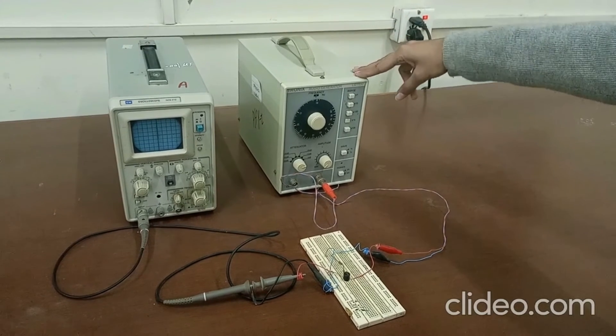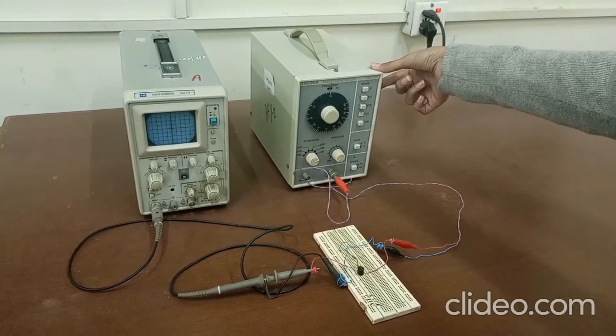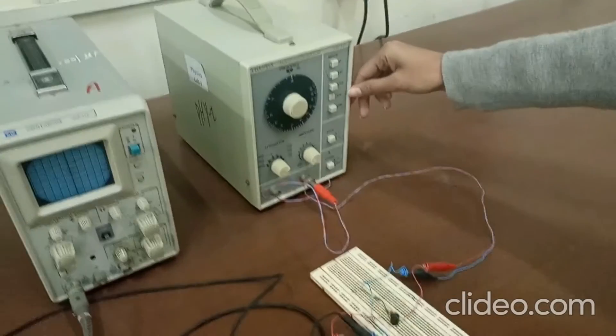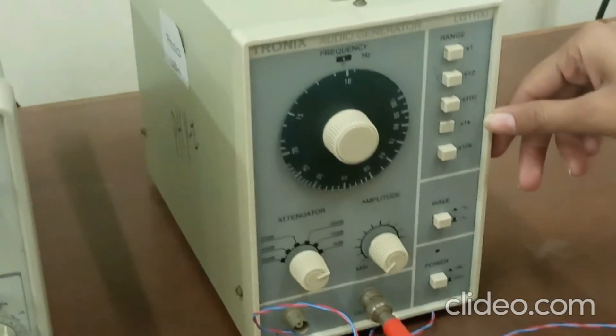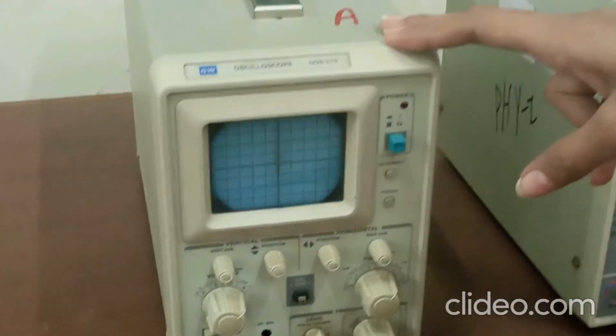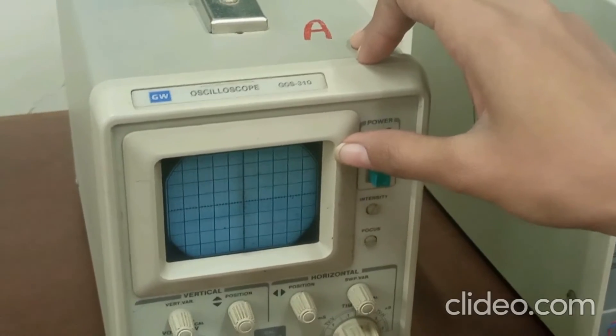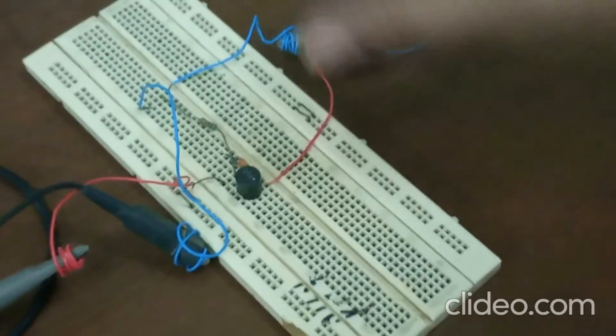Procedure: This is the experimental setup of acceptor circuit. Here you can see this one is the frequency generator from which we apply frequency. The range of frequency is 1 kHz here. This one is cathode ray oscilloscope. On this screen we can see the amplitude of our applied frequency.